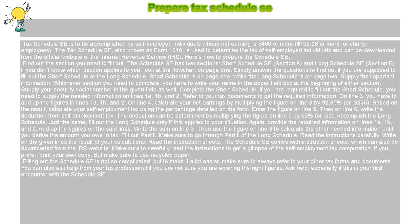To accomplish the Long Schedule, fill it out only if this applies to your situation. Provide the required information on Lines 1A, 1B, and 2. Add up the figures on those lines and write the sum on Line 3. Then use the figure on Line 3 to calculate the other needed information until you derive the amount you owe in tax.